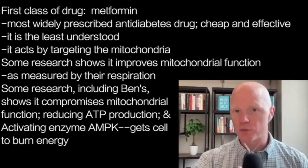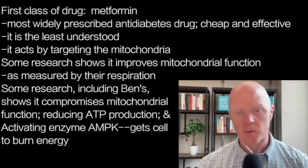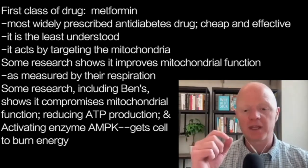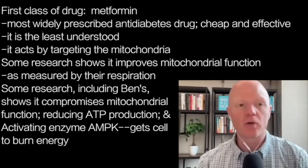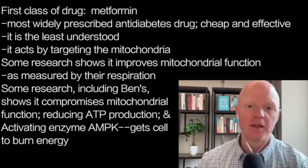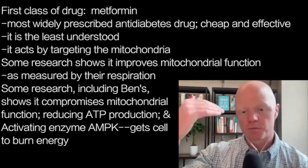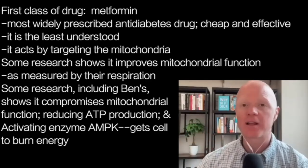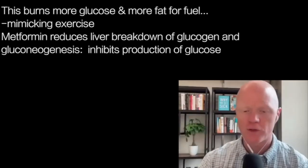The confusion is whether metformin is actually improving or compromising mitochondrial function. I was a co-author on a paper suggesting metformin actually compromises mitochondria. By disrupting one of the electron transport complexes, you're inhibiting the mitochondria's ability to burn fuel to create ATP. In doing so, reducing ATP activates an enzyme called AMPK — an ultimate catabolic master switch. When AMPK is activated, glycolysis goes up so the cell uses more glucose, and lipolysis and beta-oxidation of fats go up, so you start burning more fat for fuel.